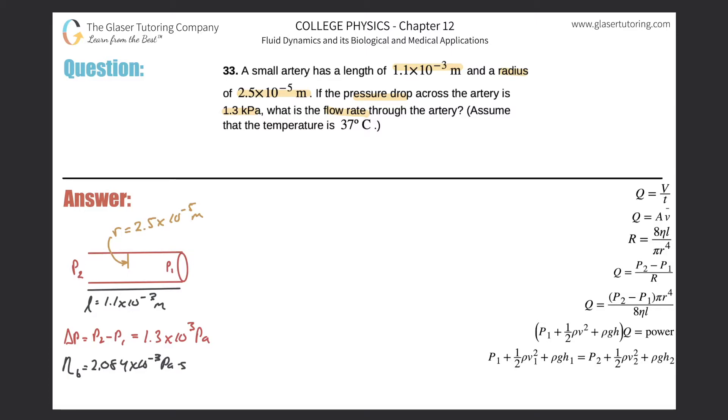So here we have an artery with a length of 1.1×10⁻³ meters. The radius is 2.5×10⁻⁵ meters. The pressure drop across this particular length, meaning the difference between P₂ and P₁, is given right here. It's also known as the change in pressure. That was 1.3 kilopascals, which I converted to 1.3×10³ pascals. Just take this value and multiply it by 1,000.